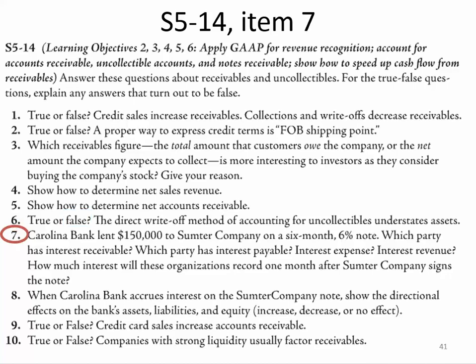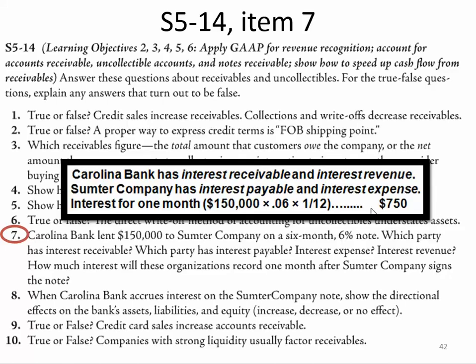Number seven: Carolina Bank lent $150,000 to Sumpner Company on a six-month, 6% note. Carolina Bank has interest receivable and interest revenue because it's the one lending the money. Sumpner Company has interest payable and interest expense because it's borrowing the money — they are mirror images of each other. The interest for one month is $150,000 principal times 6% times one month out of 12, which equals $750.